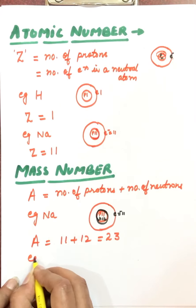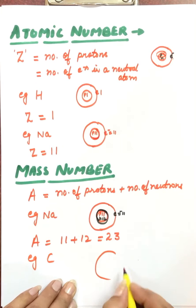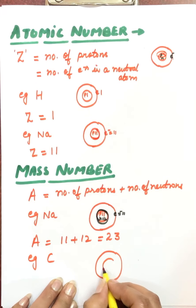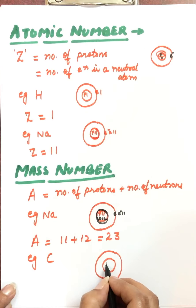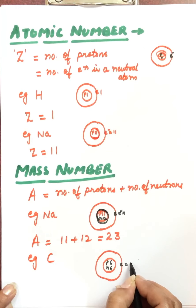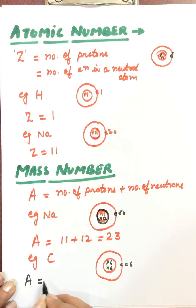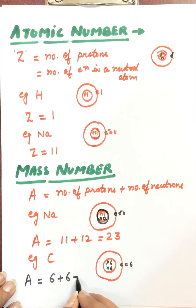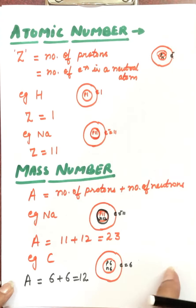Another example is carbon. In the nucleus of carbon there are six protons and six neutrons, so the mass number is six plus six, which equals twelve. So that is what atomic number and mass number are.